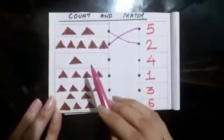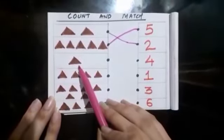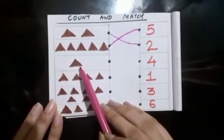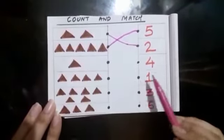How many triangles are there? Only 1 triangle. Where is 1?